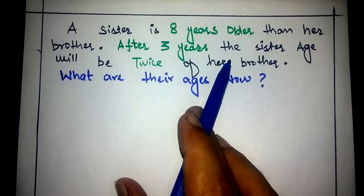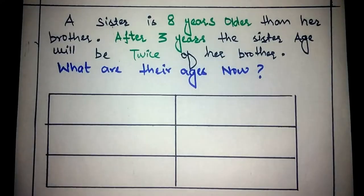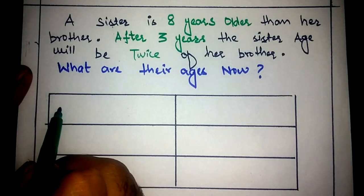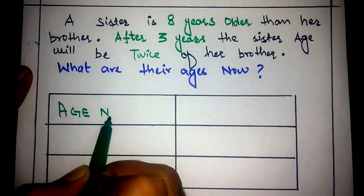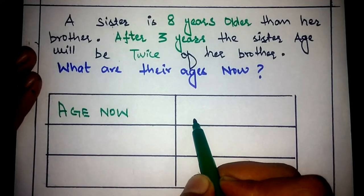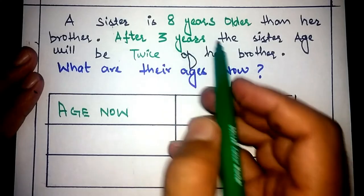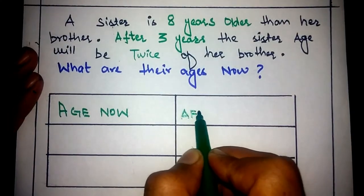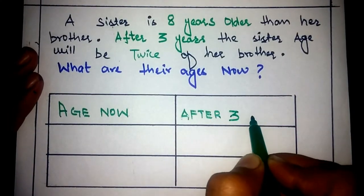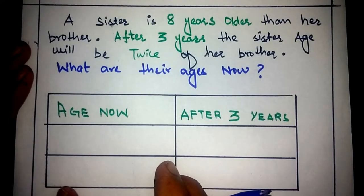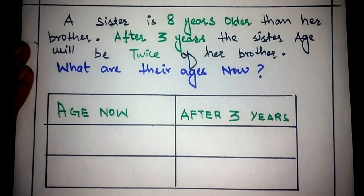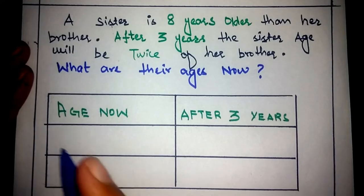The next step is to draw a table with six blocks — three rows and two columns. In the first column write the present ages (age now), and in the second column write the ages after three years. We will write equations for the present ages in one column and equations for the ages after three years in the other.